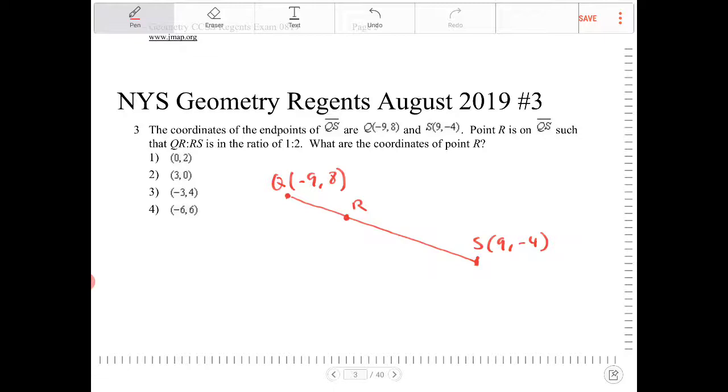I don't know what the length of QR is. I want to call that N. If that length is N, then RS must have a length of 2N. Or we can say the full length of line QS is therefore 3N.